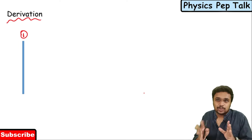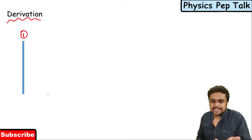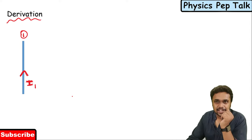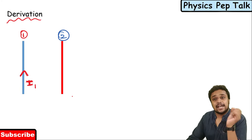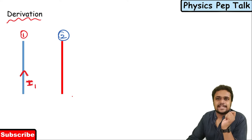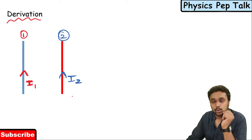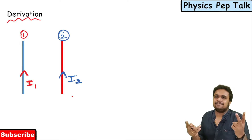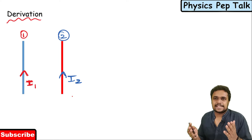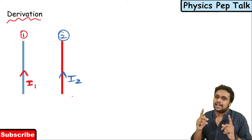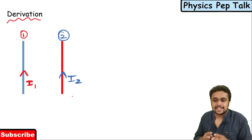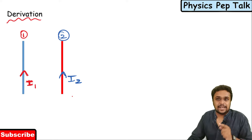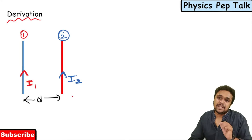I will consider conductor 1 which is carrying a current I1 in this direction as shown in the figure. I will consider another conductor, conductor 2, which is also carrying current I2 in the same direction as shown in the figure. These are infinitely long conductors 1 and 2, carrying currents I1 and I2 respectively in the same direction, separated by a distance D from each other.